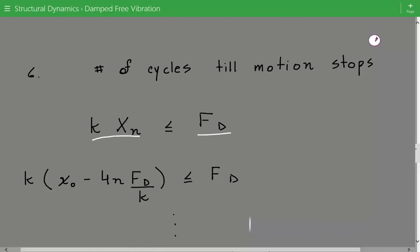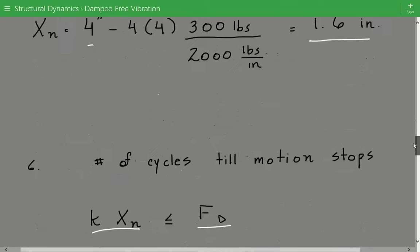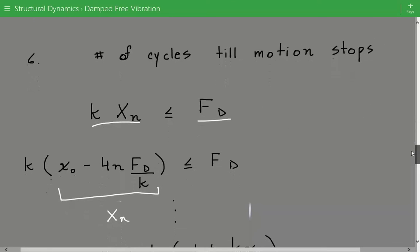So we simplify this inequality even further. k times x sub n, and from the previous step we know x sub n is equal to the initial displacement minus 4 times the number of cycles times the frictional damping force divided by k. So this whole thing is x sub n and we use this to calculate the vibration displacement amplitude. So we simplify this even further and it's less than or equal to the frictional damping force.